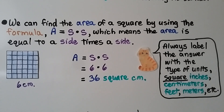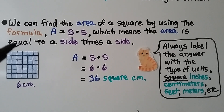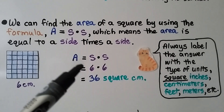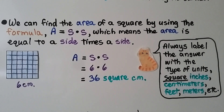We can find the area of a square using the formula: area equals side times side (S times S). A square has four equal side lengths, so if one side is 6 centimeters, all sides are 6 centimeters. We multiply 6 times 6, giving 36 square centimeters. Always label the answer with the type of units — square inches, square centimeters, square feet, square meters, etc.